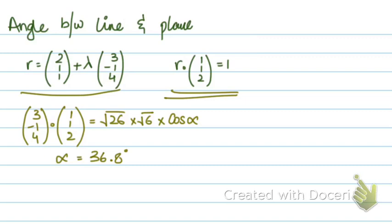If your alpha is acute, your answer will be 90 - alpha. This turns out to be 53.2 degrees. So if your alpha is acute, you subtract it from 90 to get your angle between the line and the plane.